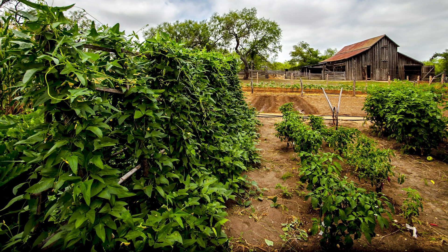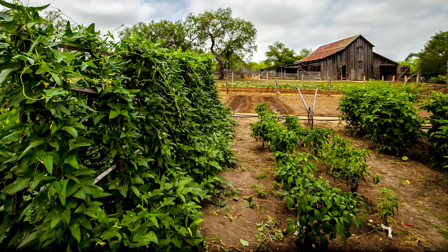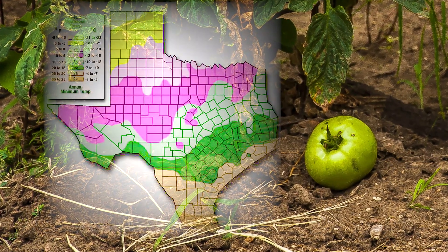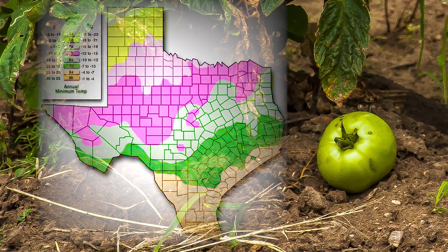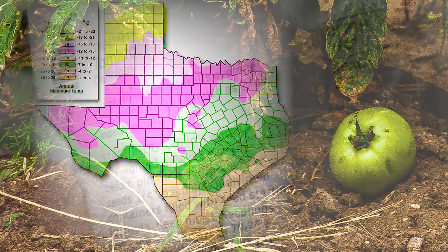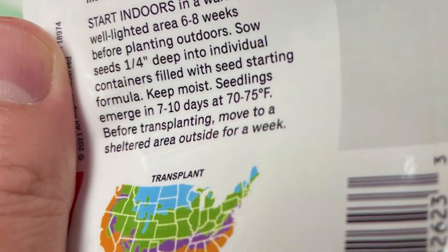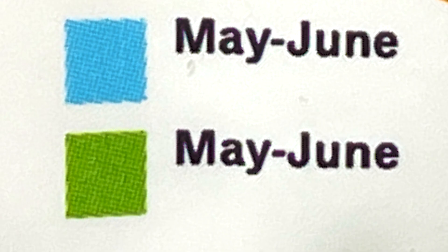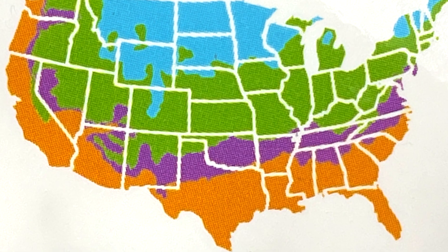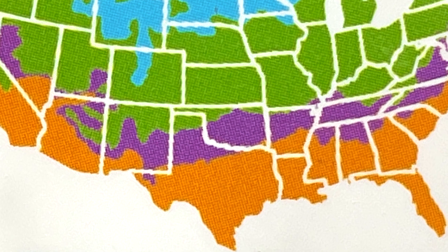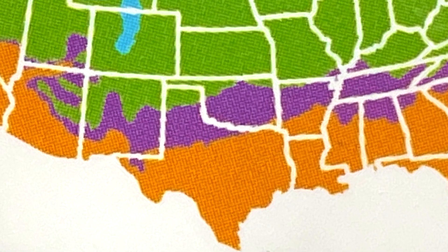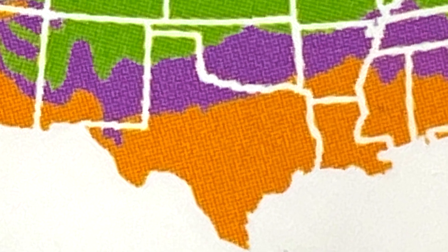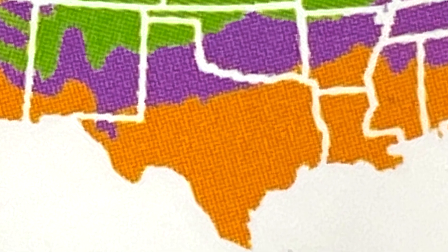How does a person plant a garden in such a diverse state? If you're trying to plant tomatoes, the United States Department of Agriculture's hardiness zones come in handy. These also usually show up on the back of a seed packet and tell you when you can probably plant that variety. In Texas, you really need to pay attention to the back of that seed package, because whether you're way up north or way down south makes a big difference.